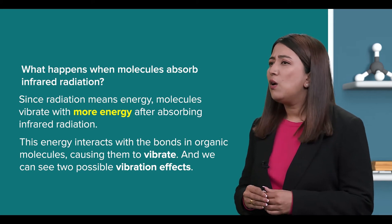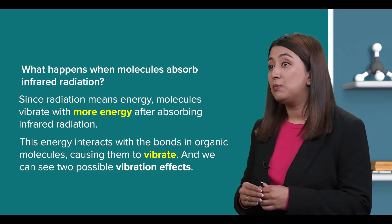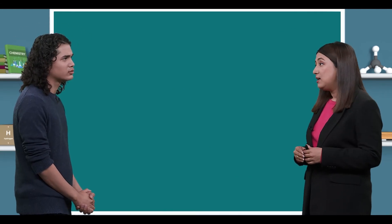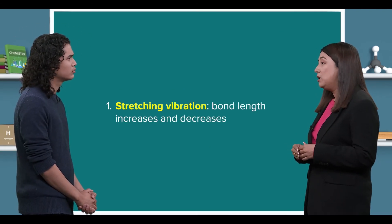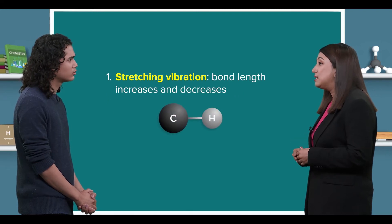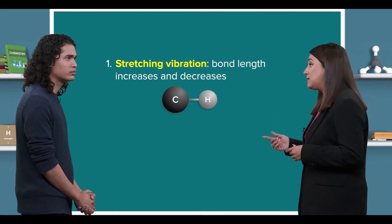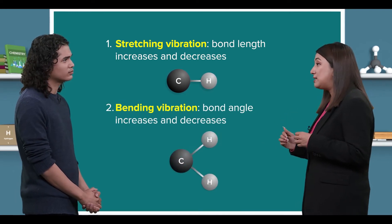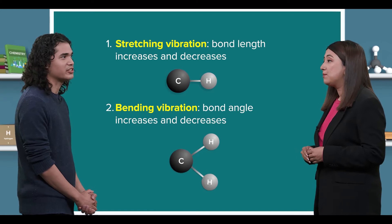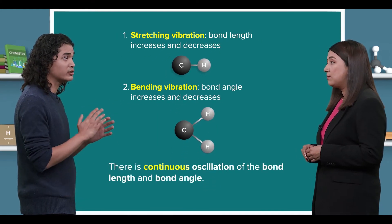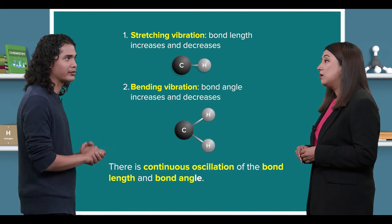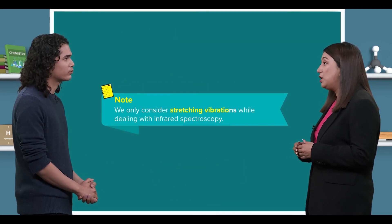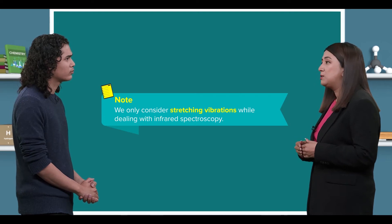Hang on, let me guess. Since radiation means energy, molecules vibrate with more energy, right? Exactly. This energy interacts with the bonds in organic molecules causing them to vibrate, and we can see two possible vibration effects. What are they, teacher? In the first case, there is a stretching vibration where the bond length increases and decreases. While in another case, there is a bending vibration where the bond angle increases and decreases. I see, so there is continuous oscillation of the bond length and the bond angle. You're right. But do note that we only consider stretching vibrations while dealing with infrared spectroscopy.